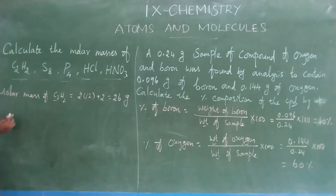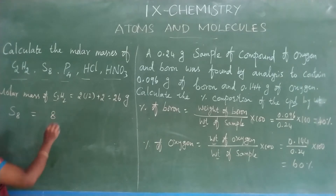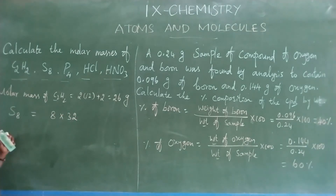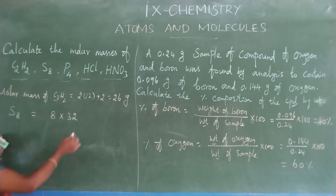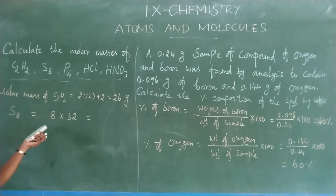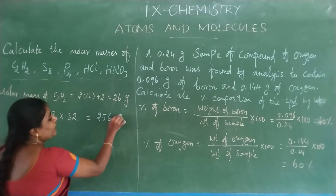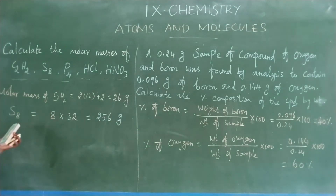Molar mass of S8 (sulfur molecule): 8 atoms of sulfur combine to form the sulfur molecule. Atomic mass of sulfur is 32. So 8 × 32 = 256 grams. The molar mass of sulfur (S8) is 256 grams.